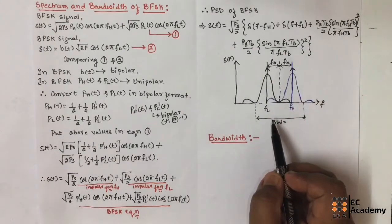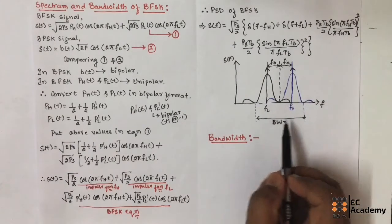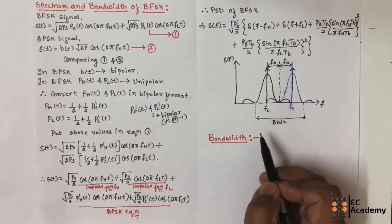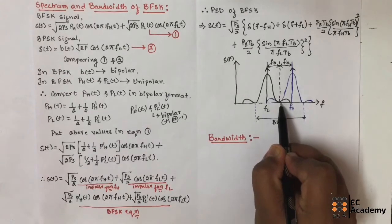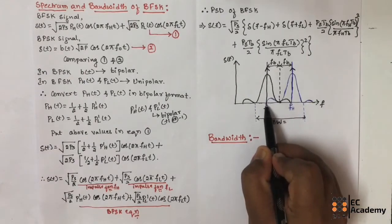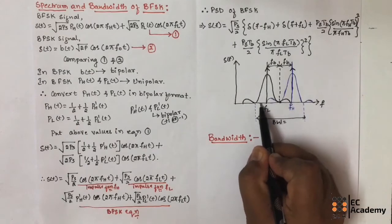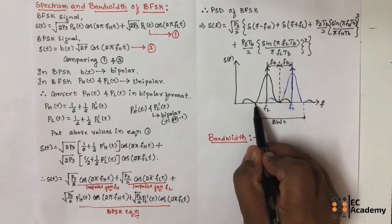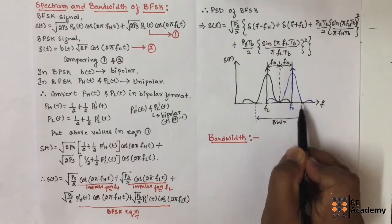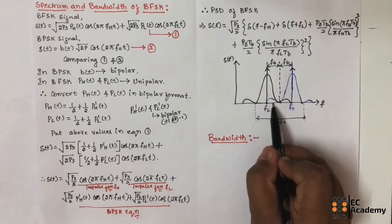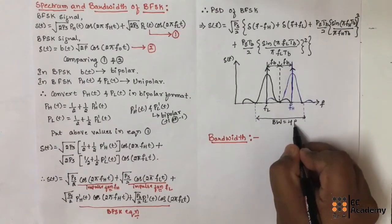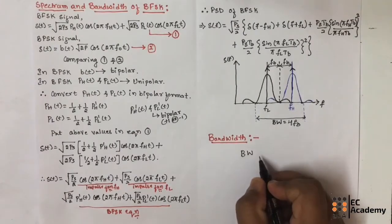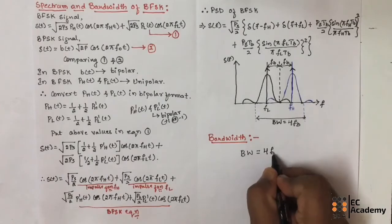The distance between fl and fh is equal to 2fb. This is the plot of power spectral density of the BFSK signal. To find the bandwidth, from this point to this point it is fb, and from here to here it is also fb. Half of this sinc function is fb, and the other half is also fb. So from this point to this point it is fb, and again from this point to this point it is fb — giving fb + fb + fb + fb = 4fb. Therefore, the bandwidth of the BFSK signal is equal to 4fb.